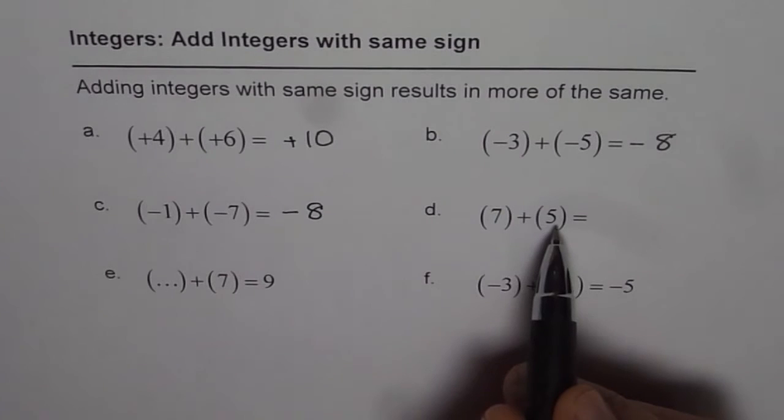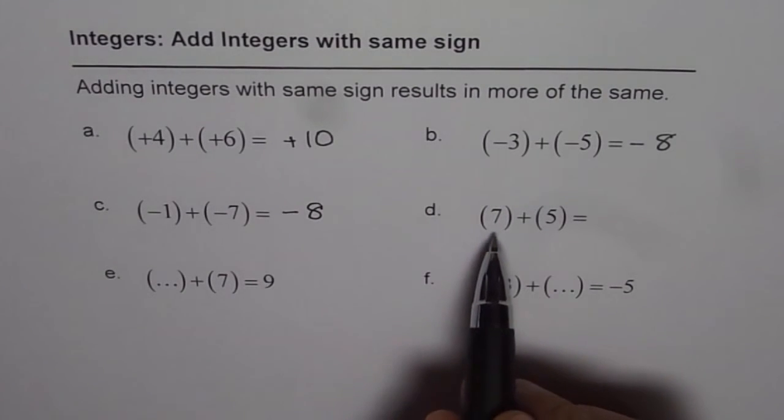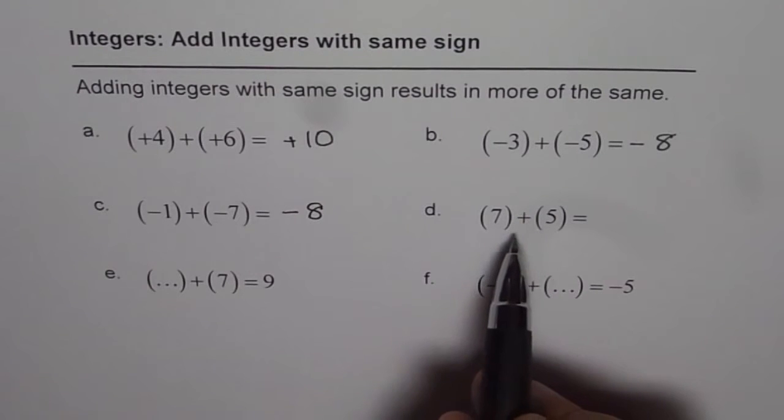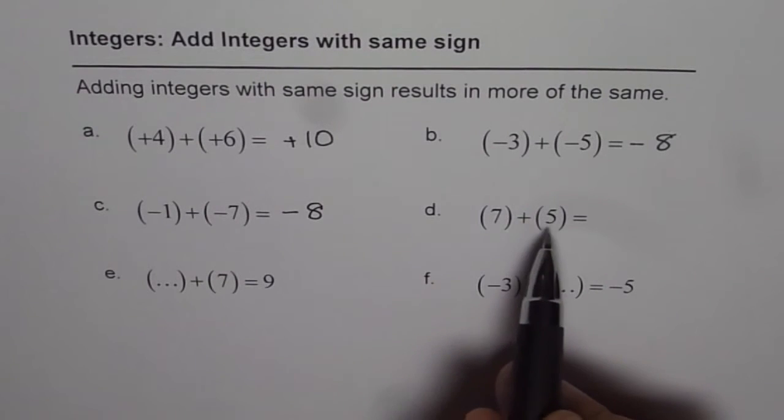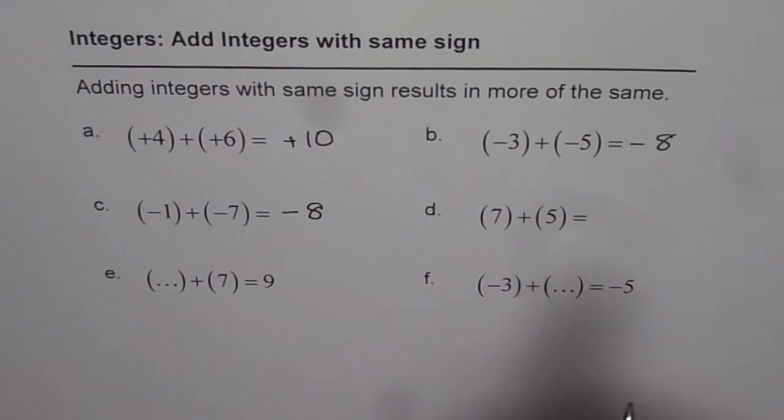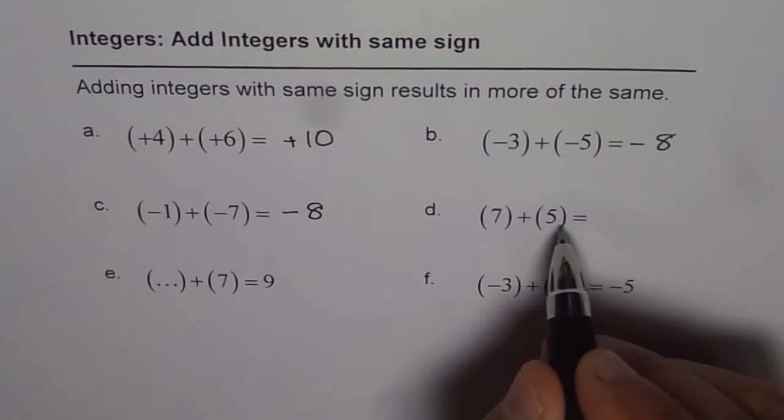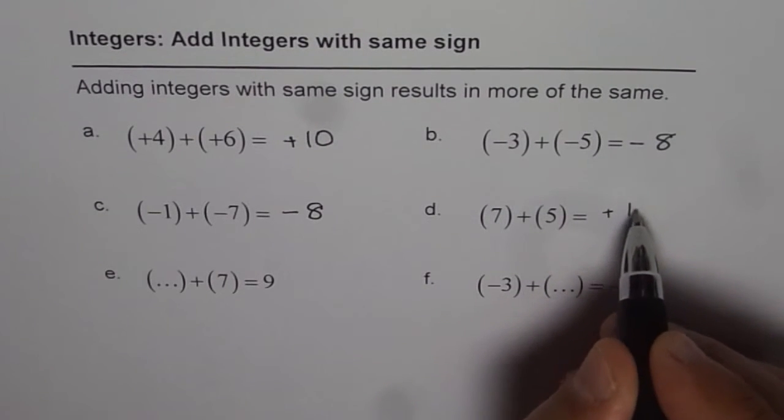7 plus 5. When I write integers without a sign, that means they are positive. So adding positive integers will give me positive integer more of the same. So positive 12.